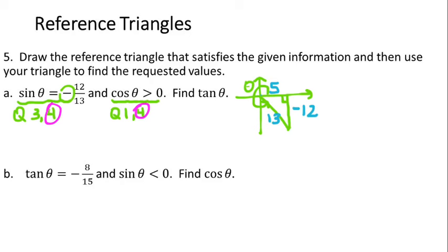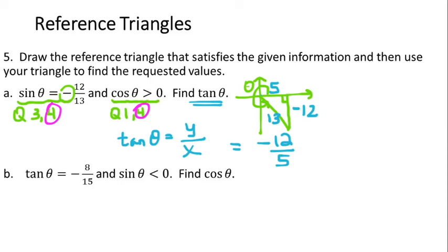Now we're asked to find tangent theta. Tangent of theta equals Y over X, so for this reference triangle that's negative 12 over 5.